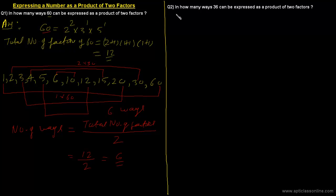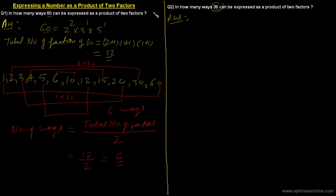Let's take another example of a different kind. In question 2: in how many ways can 36 be expressed as a product of two factors? There is a basic difference — the number 36 is a perfect square, since 6² = 36. We need to check whether the number is a perfect square or not, because the method differs.